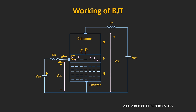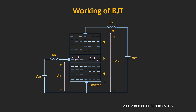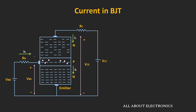Once electrons from the emitter enter the base region, they become minority charge carriers. The base-collector junction is reverse biased, so due to the applied electric field at the collector terminal, these minority charge carriers — the electrons — get attracted towards the collector terminal. Once electrons enter the collector region, they get attracted by the positive terminal of VCC. So the electrons flow from the emitter through the base and mostly into the collector. The conventional current flows in the opposite direction to electron flow, meaning base current Ib flows in one direction while collector and emitter currents flow in the other.